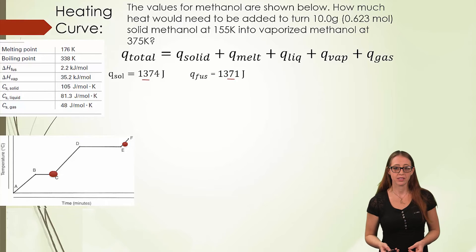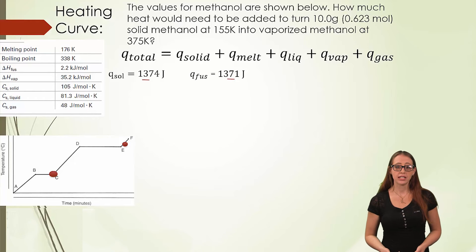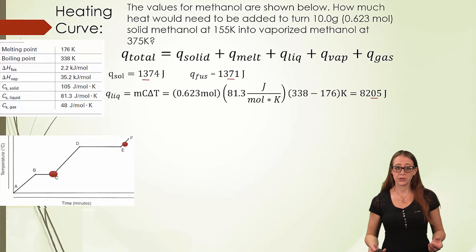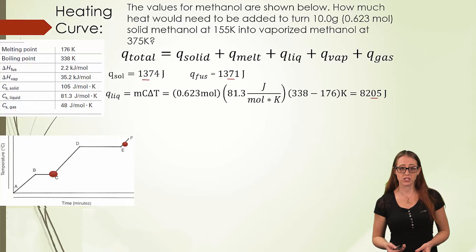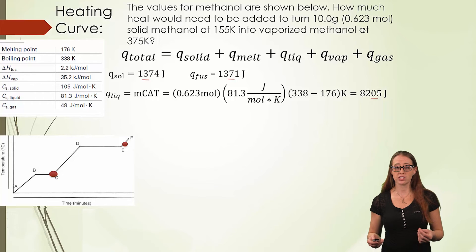Now let's do the next three. For heating the liquid, we'll do the same process as heating the solid, but now fill in the heats for the liquid methanol and the temperature from melting up through the boiling point. You can see this done here, the 0.623 multiplied by the 81.3 joules per mole Kelvin, multiplied by just the change in temperature during the liquid phase. This gives us 8205 joules.